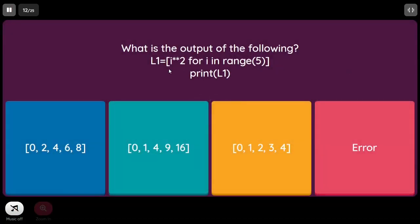What is the output of: L1 = [i**2 for i in range(5)]; print(L1)? We are using the exponentiation operator. The range is from 0 to 4, giving 0², 1², 2², 3², 4². Since 5 is not inclusive as it is the end value, the answer is option B.